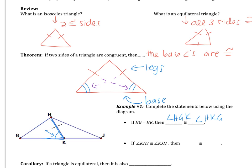For the next one, I know that angle KHJ is congruent to angle KJH. That tells me I'm looking at the triangle on the right. If I have two angles congruent, that means the legs are congruent — the sides across from those angles are congruent. So that would tell me that HK is congruent to KJ.